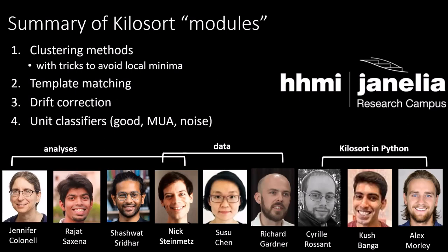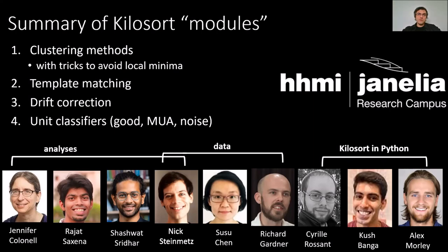Question: what happens if a neuron stops firing for a while — will the template be dropped? The answer depends on which version of Kilosort you're using. In the new version 2.5, which we'll release very soon, we no longer care about time so much because there's a pre-registration, drift correction step that mostly fixes non-stationarity across time. After that, we randomize the order of the batches, so those problems with dropping templates won't happen anymore — it will be tracked just fine even over very long periods of time.